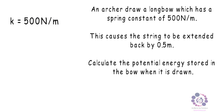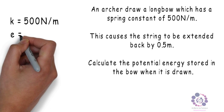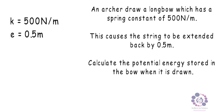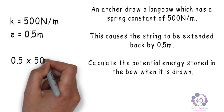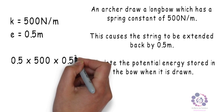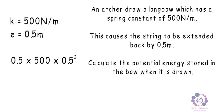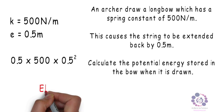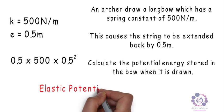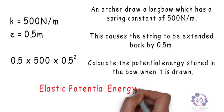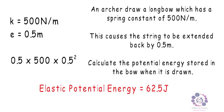When tackling the question, write out what you know from the question. The spring constant is 500 newtons per metre. The extension is 0.5 metres. Using the equation, we find that 0.5 times by 500 times by 0.5 squared gives us the elastic potential energy, which, if calculated correctly, should be 62.5 joules.